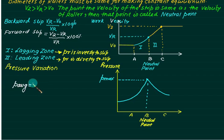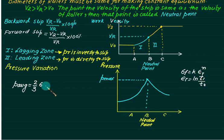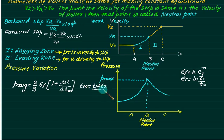The average pressure P_average is given by (2/3) × σ_f × [1 + μL / (4T_m)], where σ_f is the flow stress from the flow curve σ_f = K × ε^n (K is the flow coefficient, n is the strain hardening coefficient, and ε is true strain). True strain ε_t = ln(T1/T2). Mean thickness T_m = (T1 + T2)/2. Note: this equation is not required for gate examination — they will directly give the value of P_average.